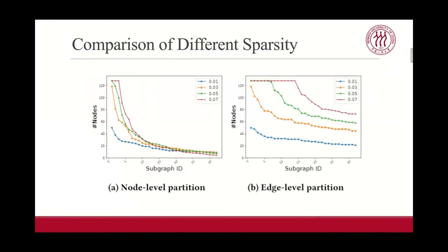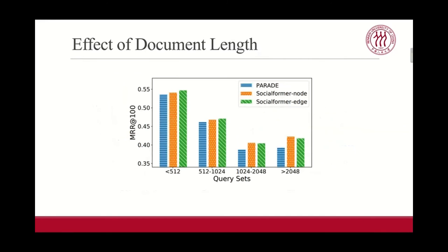We also compare the impact of different sparsity on graph partition. We select a document with 2000 tokens and set the sparsity of graph at 4 levels. We observe the relationship between the number of nodes and the sparsity as follows. First, we observe that as the sparsity increases, the number of nodes in the top subgraphs will also increase. And the lower sparsity cannot bring more information if we set the max number of subgraphs is 16. Comparing the two strategies, we find that the number of nodes in node level partition drops quickly.